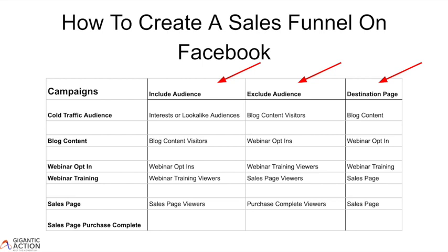The next campaign, we will take our webinar opt-ins, we'll exclude people that have viewed the webinar, but we'll send the people to our webinar training page. The next campaign, which is the webinar training campaign, we will take everybody that have viewed the webinar but have not viewed the sales page, and we'll send them to the sales page.